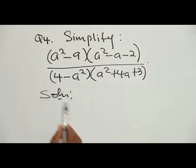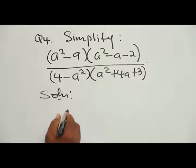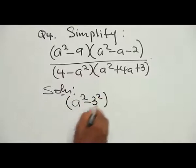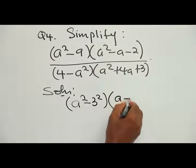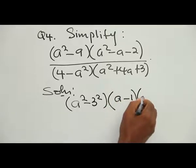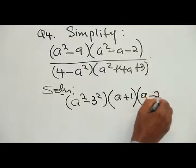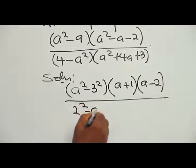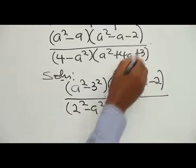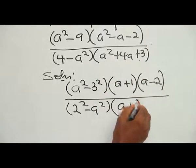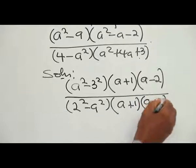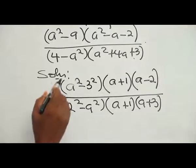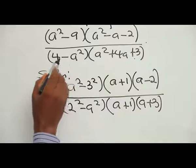The first term, A squared minus 9, can be written as A squared minus 3 squared. The second term, A squared minus A minus 2, factorizes to (A minus 1) — wait — it factorizes as (A plus 1)(A minus 2). Then 4 minus A squared is written as 2 squared minus A squared. The last term, A squared plus 4A plus 3, factorizes to (A plus 1)(A plus 3).